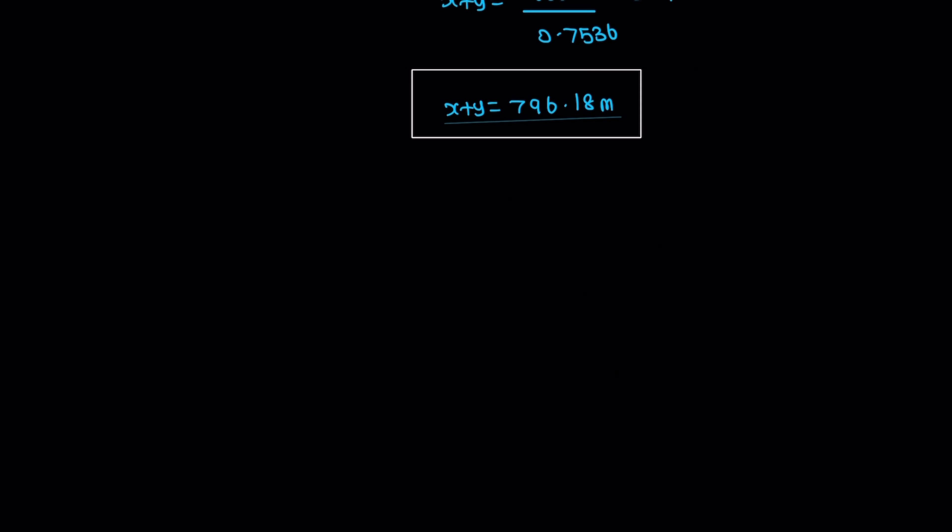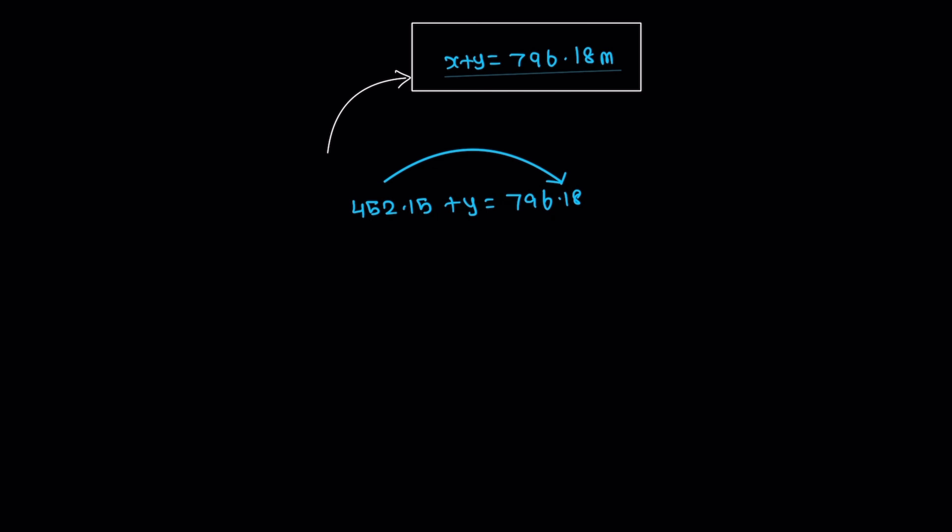Now X plus Y, substituting X value: 452.15 plus Y equals 796.18. Therefore Y equals 796.18 minus 452.15, which equals 344.03 meters.